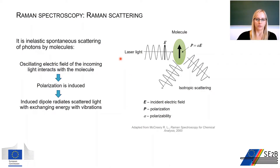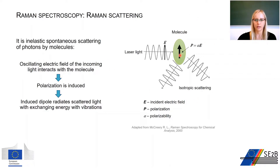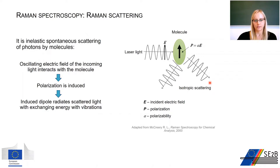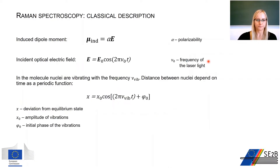In Raman spectroscopy we have a light frequency change after it is scattered by a molecule. This scattering is inelastic. In the classical description of this effect, polarization is induced in a molecule by the oscillating electric field of incoming light, and then this induced dipole scatters light isotropically with or without exchanging its energy with vibrations of the molecule. In detail, scattering can be described using quantum mechanics.